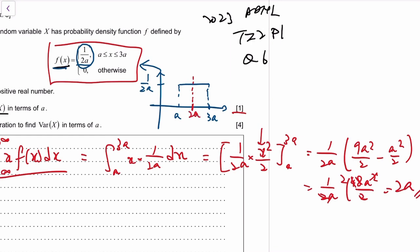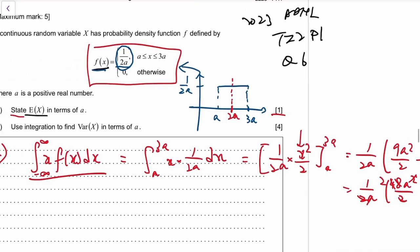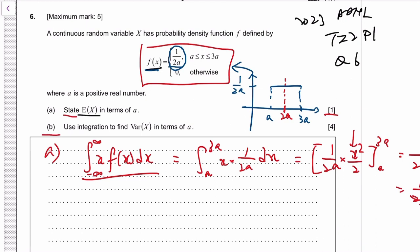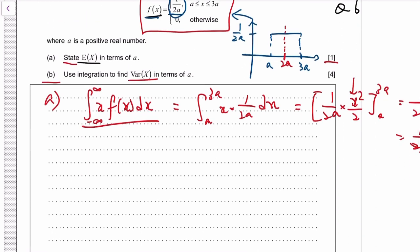And then part b is also straightforward. You just do the variance by the variance definition, so you do the integral of x² f(x) dx, and then minus the mean squared.